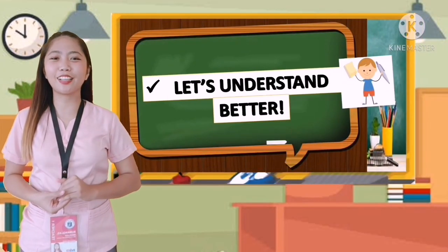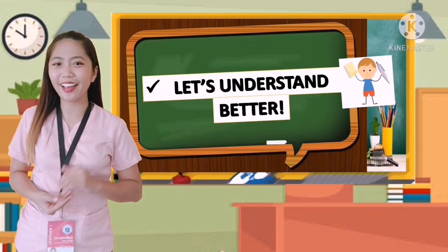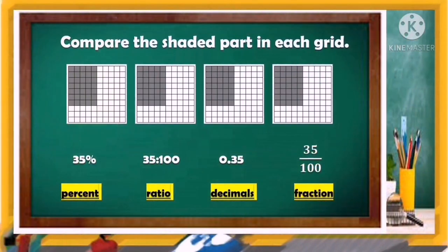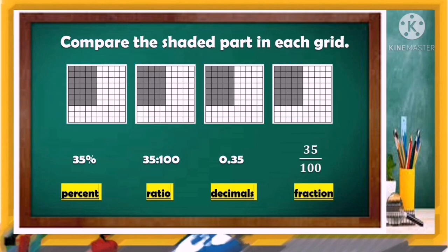I have another example so you can understand percent better. Let us compare the shaded parts in each grid. What did you observe from these figures? You are right — they have the same shaded parts. Now let's look into their representations.